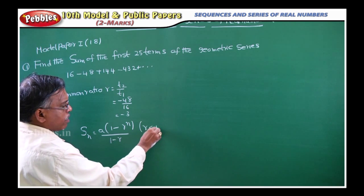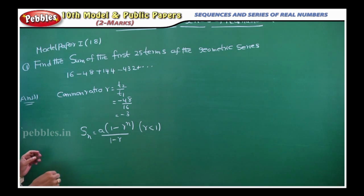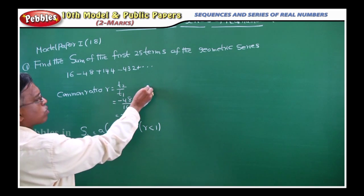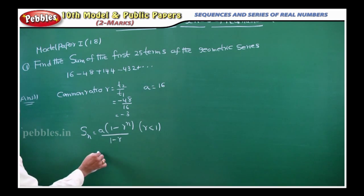Since R is less than 1, now what is A here? First term, what is first term? 16. So A value is also 16. Then you substitute here.